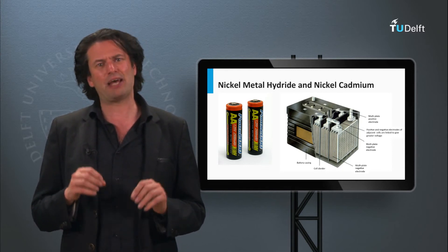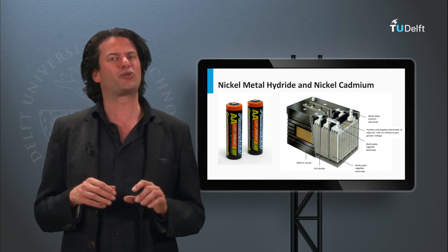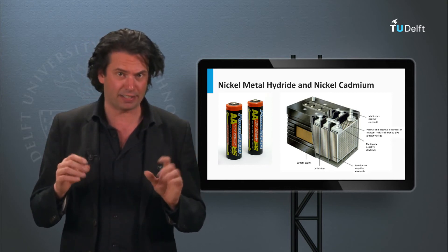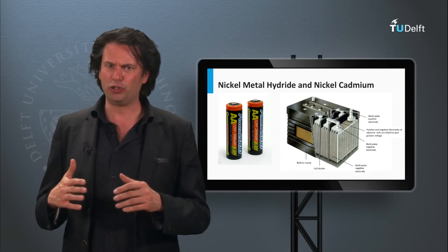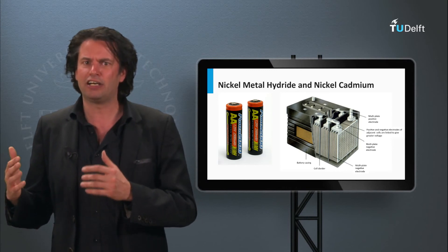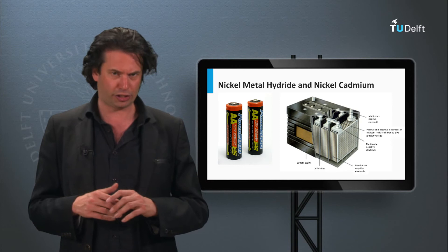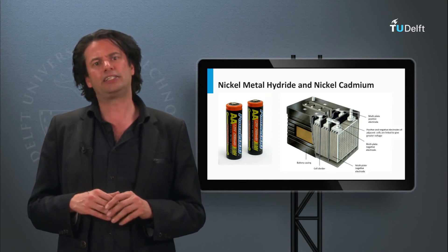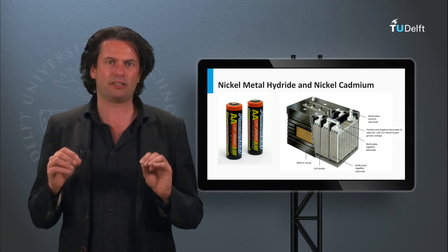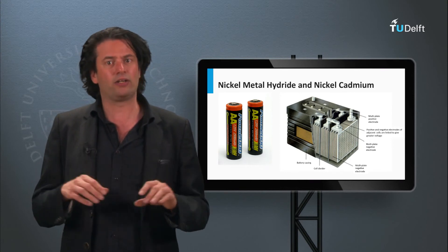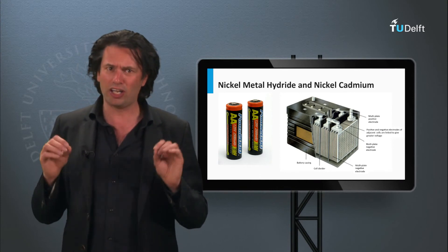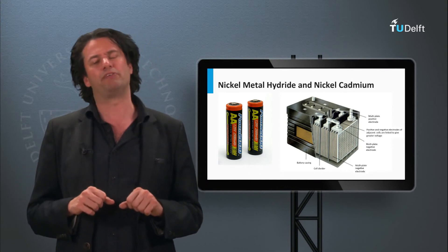Further, nickel-cadmium batteries suffer from what is called as memory effect. The batteries lose their usable energy capacity if they are repeatedly charged after only a partial discharge. These demerits make the nickel-cadmium and the nickel-metal hydride unlikely candidates for storage in a PV system.